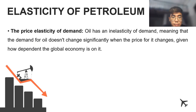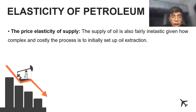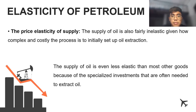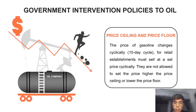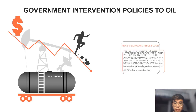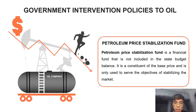Regarding the elasticity of petroleum, we have the price elasticity of demand and the price elasticity of supply. The price of gas changes cyclically on a 10-day cycle. Retail establishments must sell at a set price cyclically; they are not allowed to set the price higher than the price ceiling or lower than the price floor. The petroleum prices stabilization fund is a financial fund not included in the state budget balance. It is constituted from the base price and is only used to serve the objectives of stabilizing the market. Domestic gasoline prices, according to the procedure of law, should not let the price of goods and services increase too high or too low unreasonably.